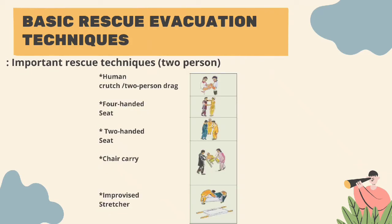Important rescue techniques for two rescuers include: human crutch and two-person drag. For the conscious victim, the human crutch allows the victim to swing their legs using their rescuers as a pair of crutches. For the unconscious victim, it is a quick and easy way to move a victim out of immediate danger. The four-handed seat technique carries conscious and alert victims moderate distances — the victim must be able to stand unsupported. The two-handed seat technique carries a victim longer distances and can support an unconscious victim. The chair carry is a good method for carrying victims up and down stairs or through narrow or uneven areas.